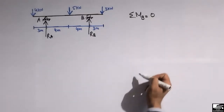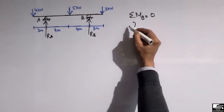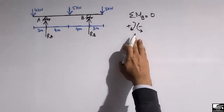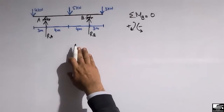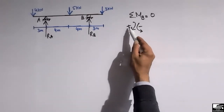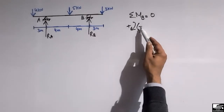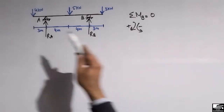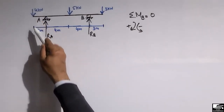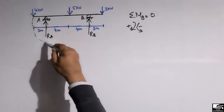Let us assume the summation of moments at point B equals zero. Clockwise moments are taken as positive and anti-clockwise moments are taken as negative — this is the sign convention for this beam. Starting with the 4 kN force: it acts downward and will create a moment about point B in the anti-clockwise direction.